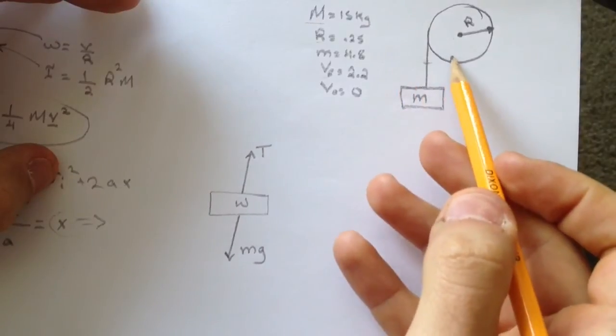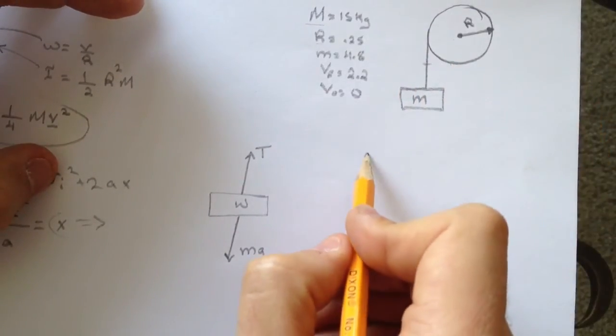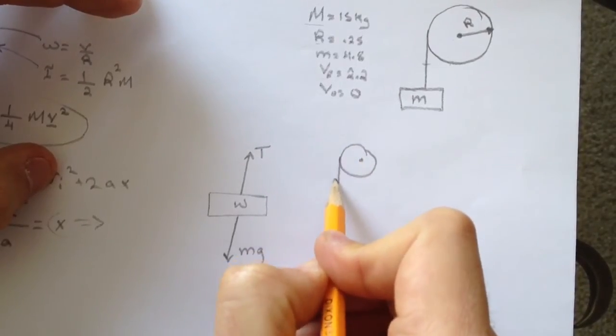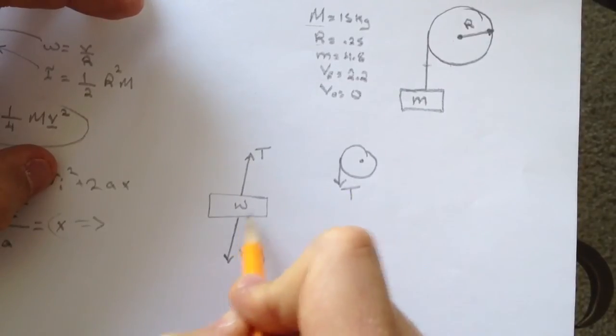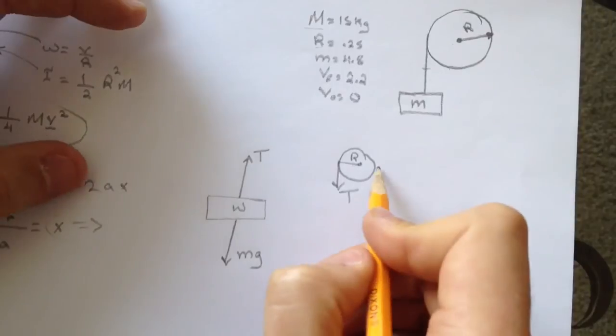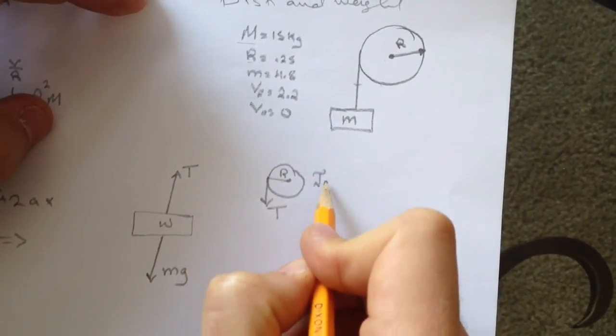If we draw a free body diagram for the disc, we'll get tension going down. In rotational motion, the torque equals fr sine theta.